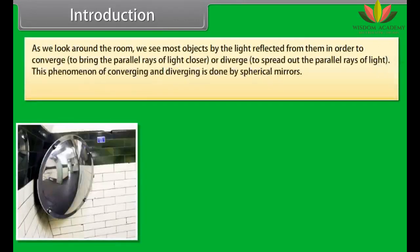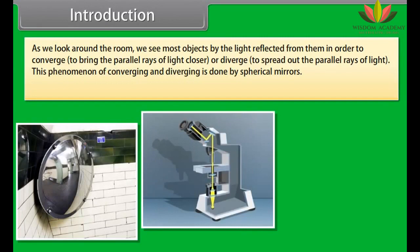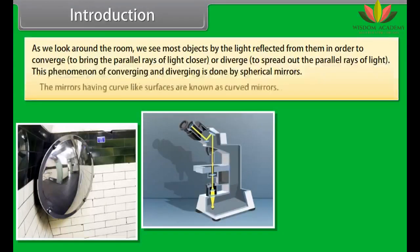As we look around the room, we see most objects by the light reflected from them. In order to converge — to bring the parallel rays of light closer — or diverge — to spread out the parallel rays of light — this phenomenon of converging and diverging is done by spherical mirrors. The mirrors having curve-like surfaces are known as curved mirrors.